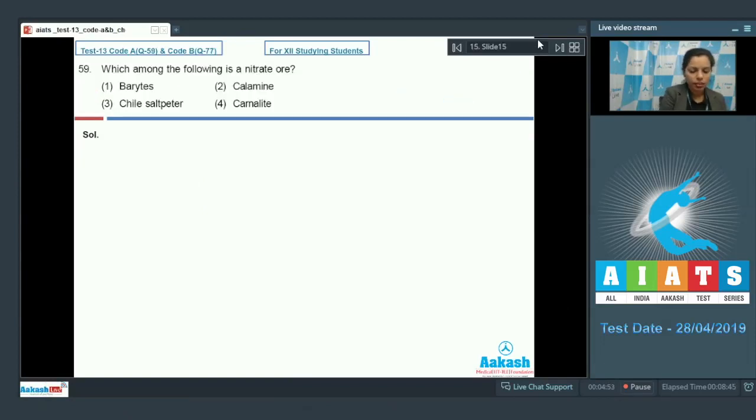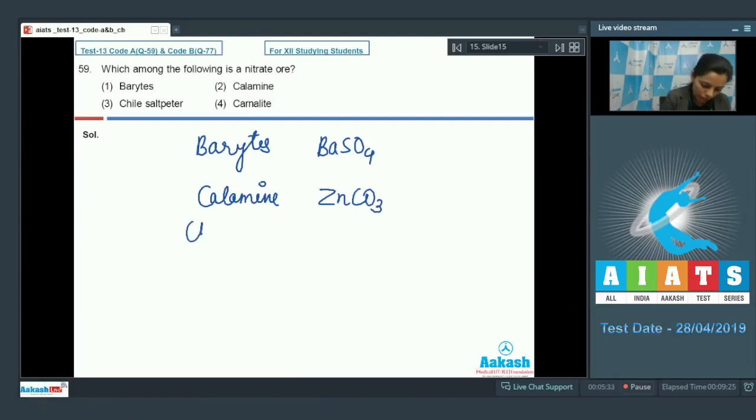After that, question number 59. Which among the following is a nitrate ore? If I talk about the first one, that is barites. This is the ore of barium, barium sulfate. It is sulfate ore. Further, calamine. That is ZnCO₃. After that, chili saltpeter.